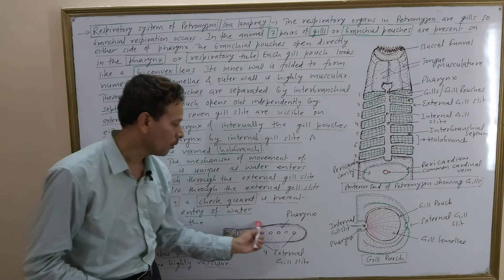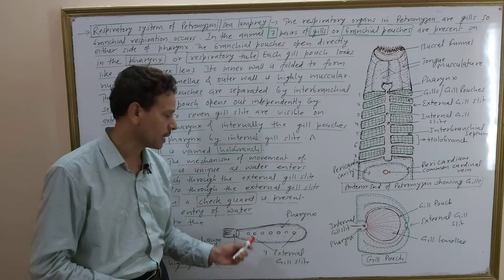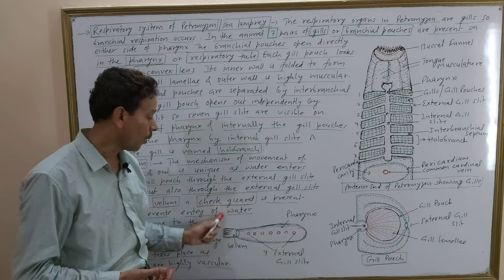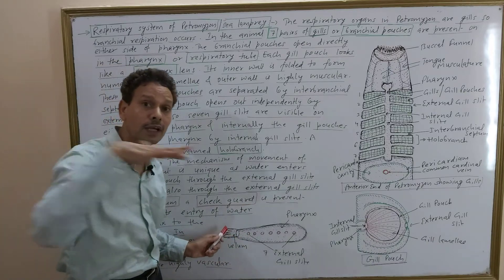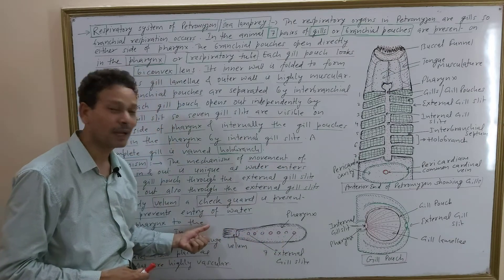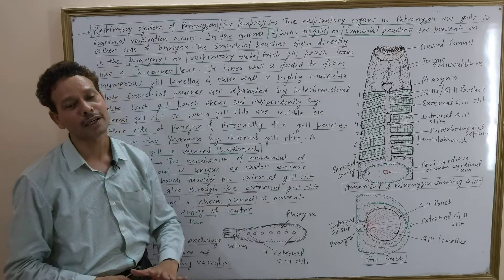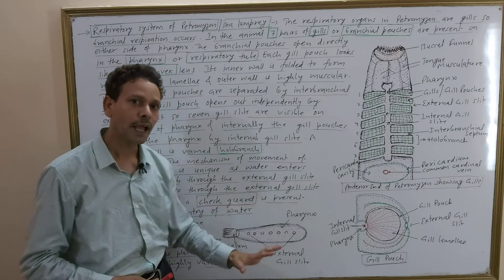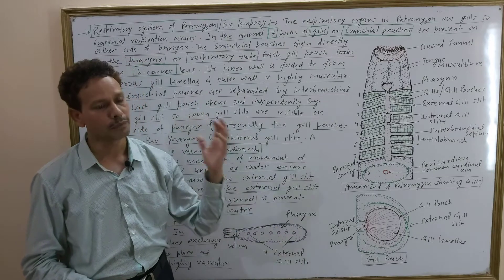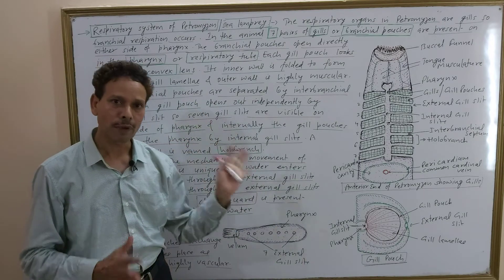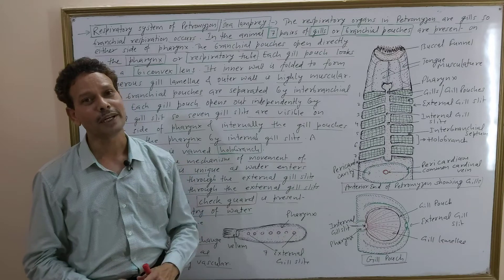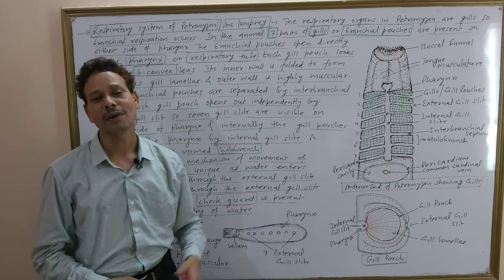The full pharynx structure is a simple tubular blind sac. Posteriorly and anteriorly there is a check guard — a valve — and the vellum is there. That vellum has finger-like projections, tentacles, which prevent water from pharynx to buccal cavity, and food particles from buccal cavity to pharynx. So the vellum works in both feeding habit and respiration. This was the respiratory system lecture, a fairly simple topic. After this, the next important lecture we will discuss tomorrow is the circulatory system. Thank you.